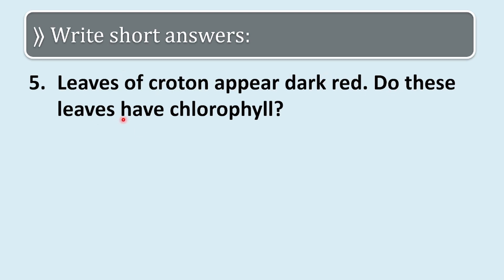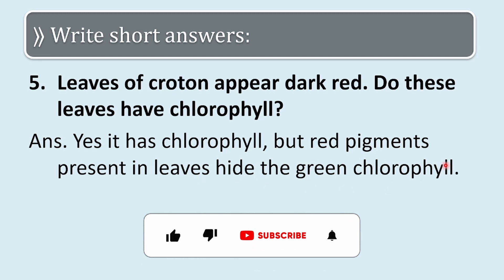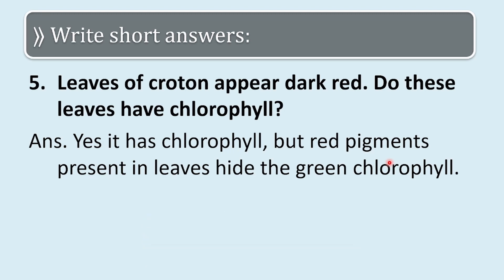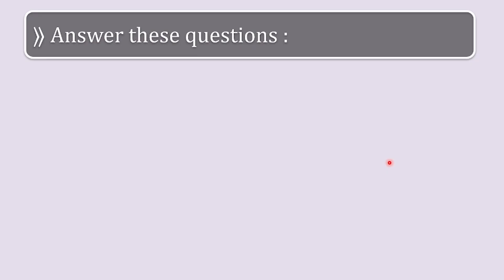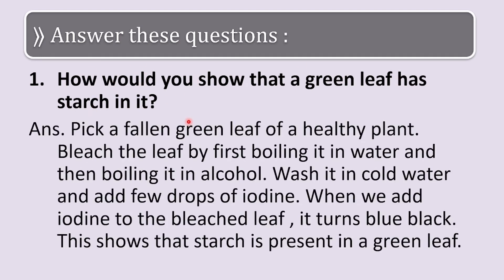Fifth question: leaves of croton appear dark red — do these leaves have chlorophyll? The answer is yes, they do have chlorophyll, but the red pigments present in the leaves hide the green chlorophyll. The red pigments are quite dominant, so the leaves appear red. Now we move to long answers.